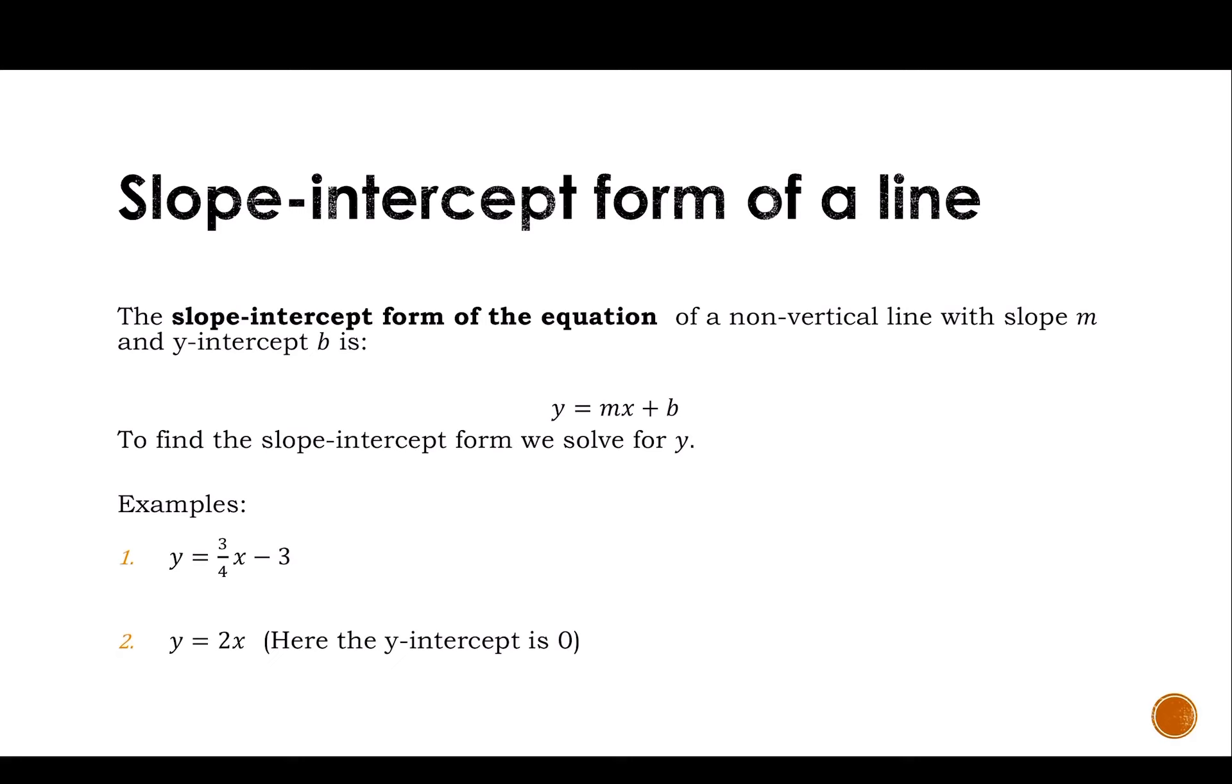So slope-intercept form of the line is y equals mx plus b, where m is our slope and b is our y-intercept.